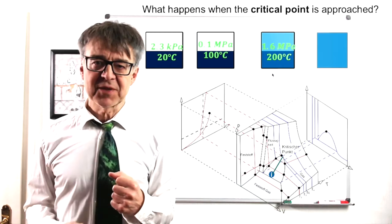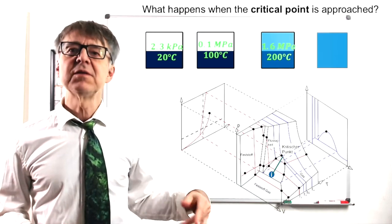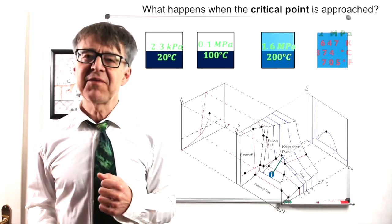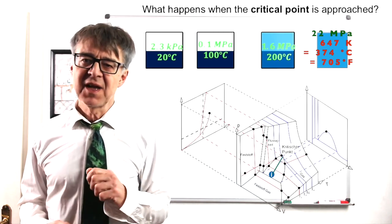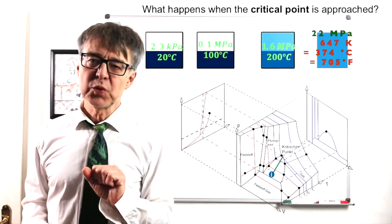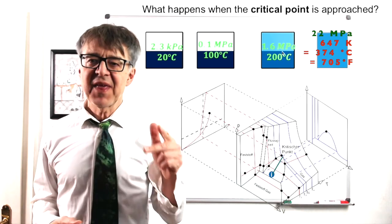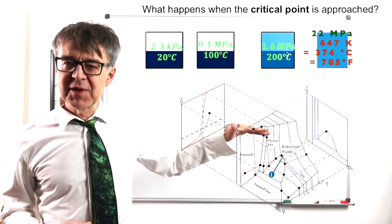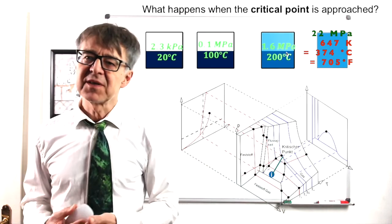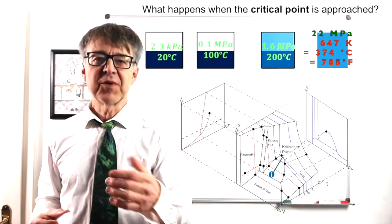At some point, namely at 544 kelvins, the pressure is 22 MPa and then the dividing line between liquid and gas disappears. We have reached the critical point.